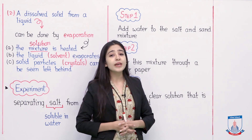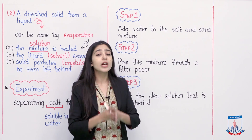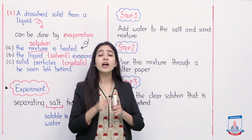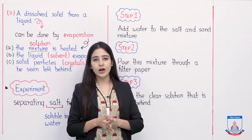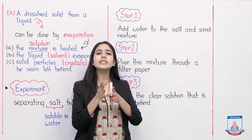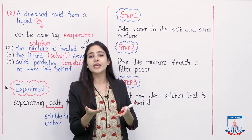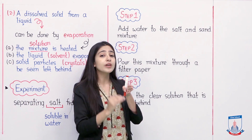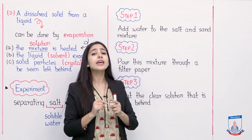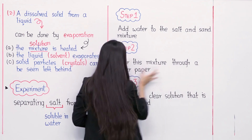We have three steps. Step 1: add water to the salt and sand mixture. We had our salt and sand mixture and we added water to it. Since salt dissolves in water and sand is insoluble in water, when we add water and stir well, the salt dissolves nicely in the water. We should not let the sand settle down, because if sand settles, some water and salt will also be lost with it. So we stir well and move to step 2.